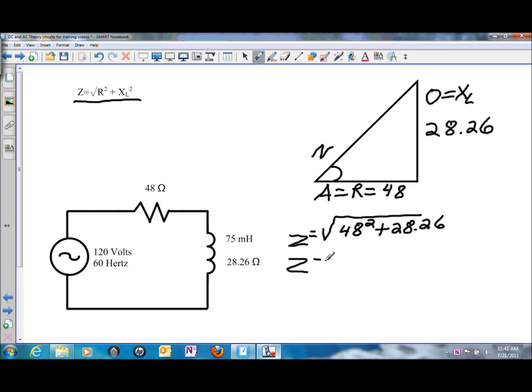Solving for that value would be a total of 55.7 ohms of impedance. And that is the total opposition to current flow in this specific circuit. And this would be the impedance triangle that we built.